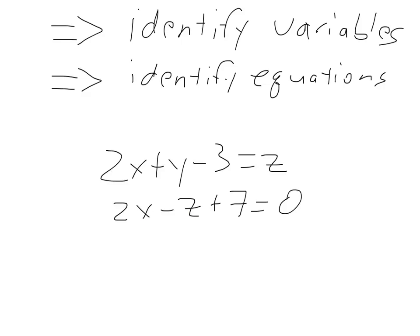If you were given this problem, you'd look at it and say something's not right — I'm missing an equation. That's when you go back and look at your problem statement, look at your diagram of your process or whatever information is given, and say: I need one more equation. Then you figure out what that equation is before you solve.